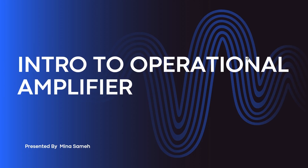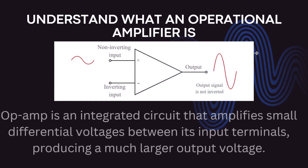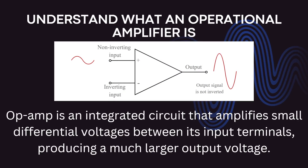In this video, we'll introduce you to one of the most versatile and widely used electronic devices in the field of analog circuitry: the operational amplifier, often referred to as an op amp. At its core, an op amp is an integrated circuit that amplifies small differential voltages between its input terminals, producing a much larger output voltage. This amplification is achieved through the clever use of transistors and other electronic components packed onto a single chip.